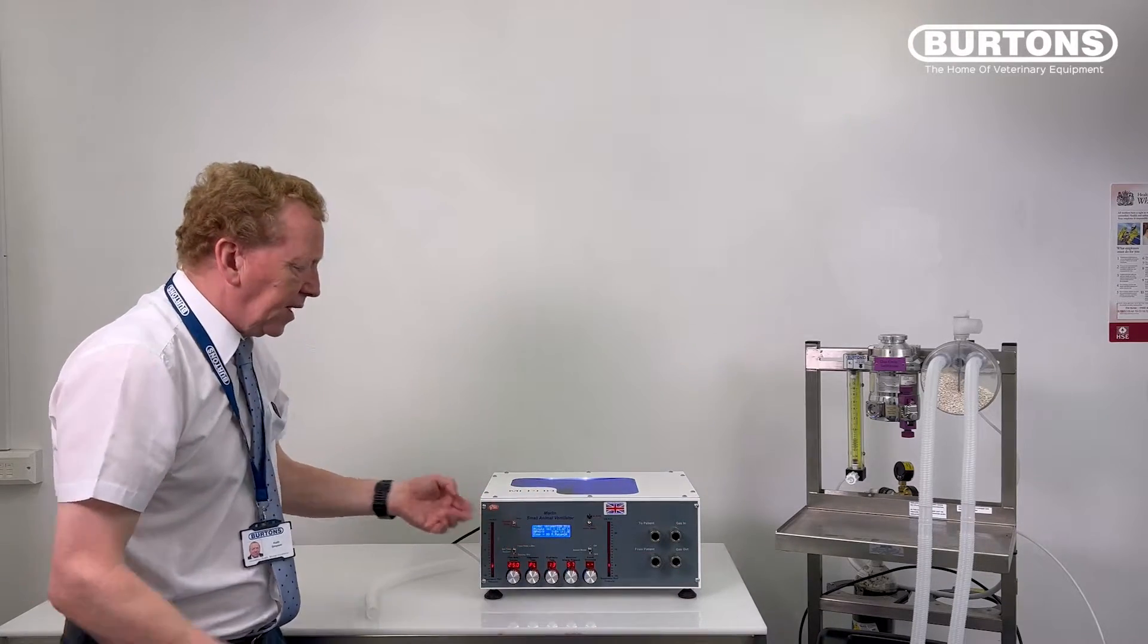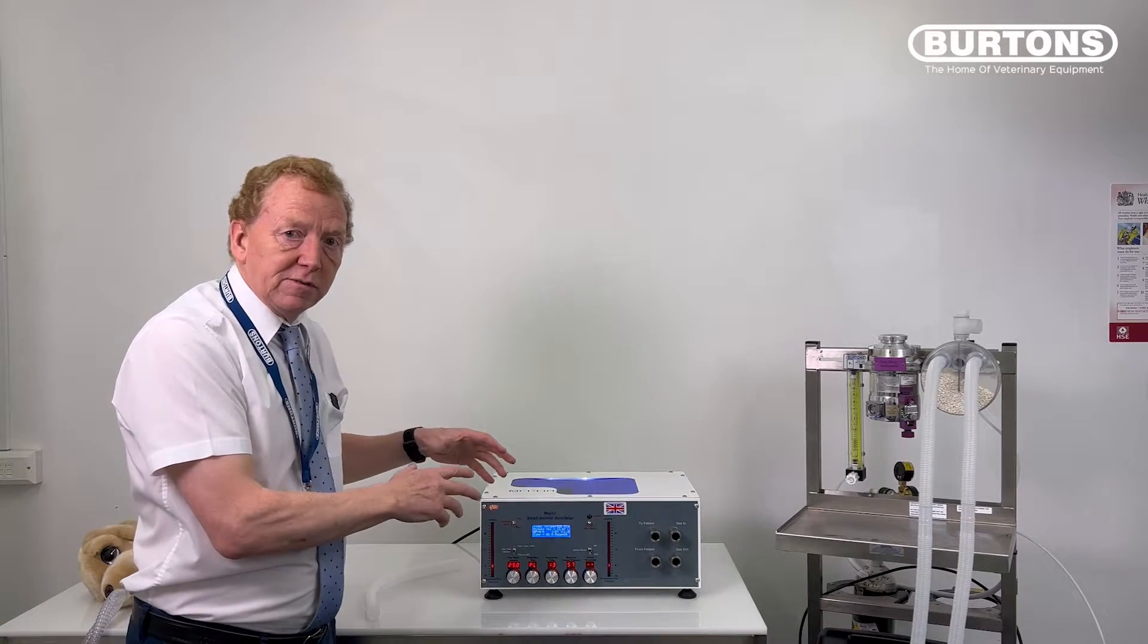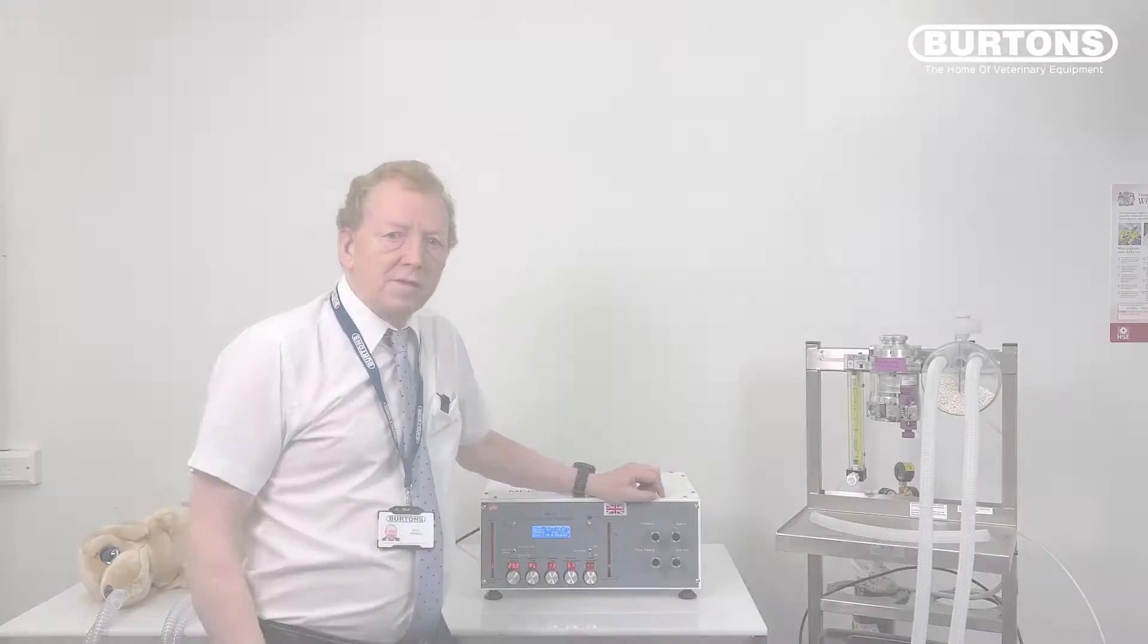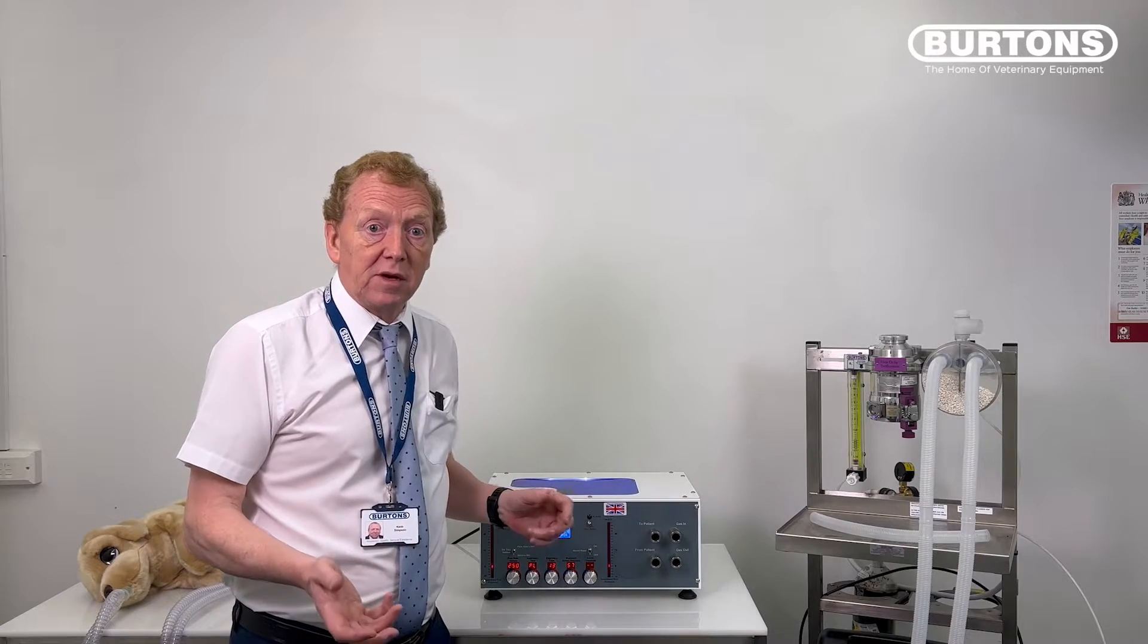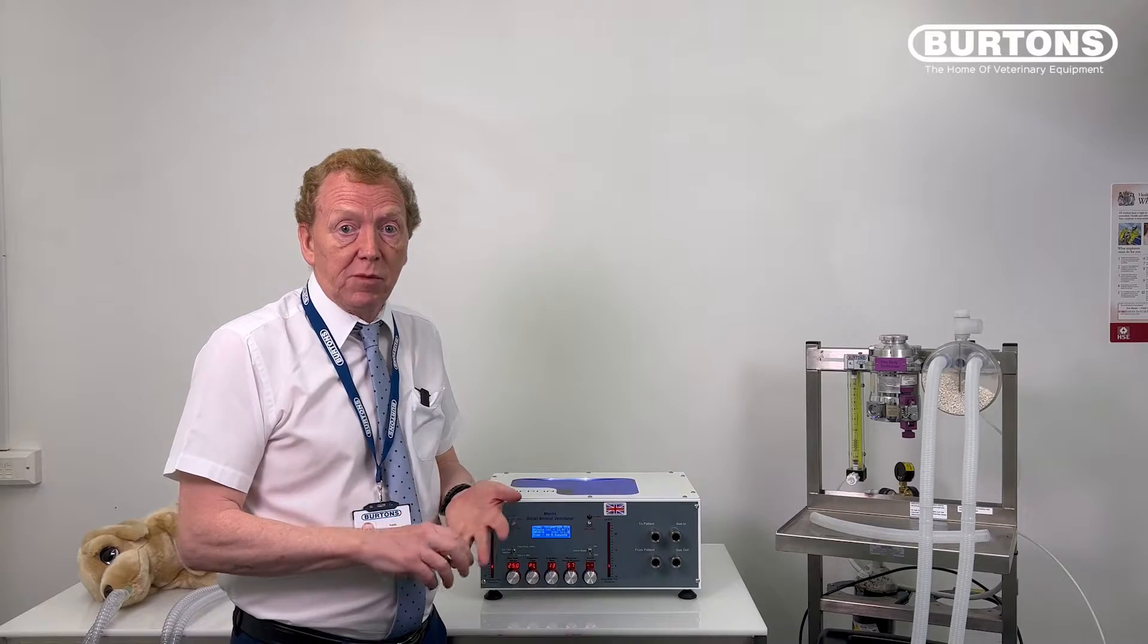So there we are. This machine is performing perfectly, so I now know that I'm ready to use the machine. It's got no leaks and performance at a level where I'm happy with it. The second part of your Merlin setup is now going to be the plumbing. We're going to set it up for non-rebreathing and a rebreathing system.